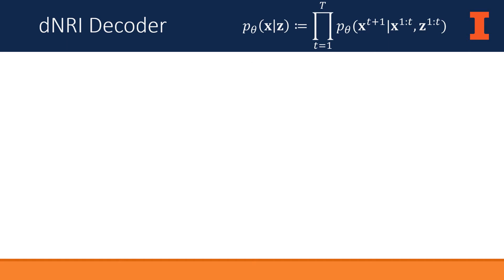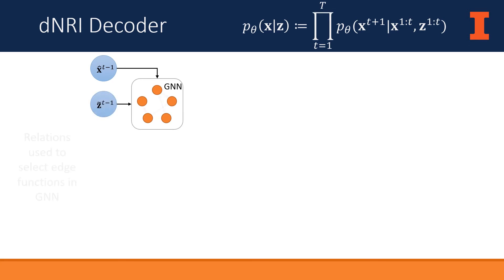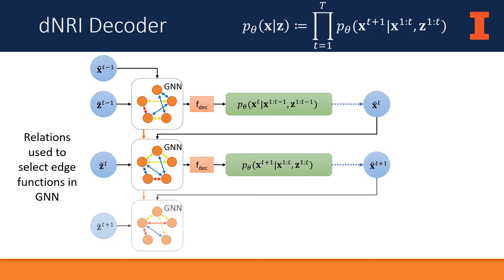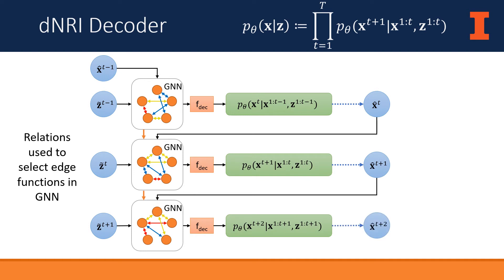The decoder processes the input features at a given point in time by passing them through a graph neural network. There is one set of edge functions for every relation type, and the function used for every pair of variables is determined by the relation variables sampled in the previous step. The hidden state for each entity is then passed through a linear layer to produce a distribution over its states for the next time step conditioned on the past. The final decoder distribution is autoregressive and consists of the product of these individual distributions.